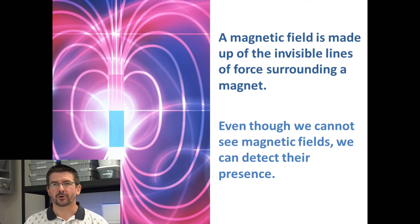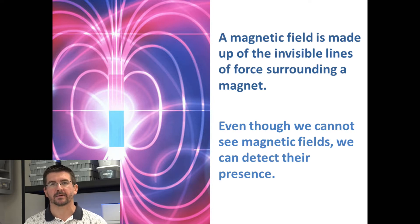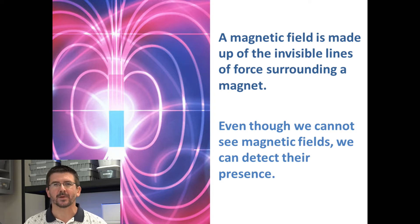Without the magnetic field, a magnet wouldn't be able to attract or repel other magnets or do all of the other things that magnets can do. Even though we can't see the magnetic field — because it is essentially energy, it's a force around the magnet — we can detect its presence, and we'll be looking at how we can detect the presence of magnetic fields.